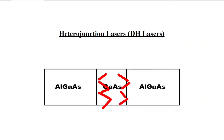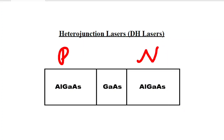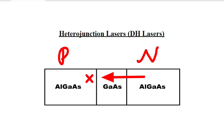There will be total internal reflections at both interfaces. A typical double heterojunction consists of a thin layer of GaAs sandwiched between two layers of p-type and n-type AlGaAs. There will be potential barriers at the two heterojunctions, which restrict the flow of electrons from n-type AlGaAs to p-type AlGaAs. This results in a large concentration of accumulated carriers in the thin GaAs layer.